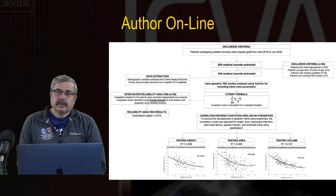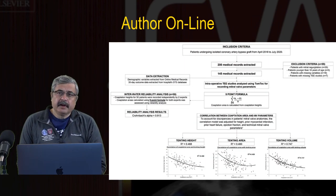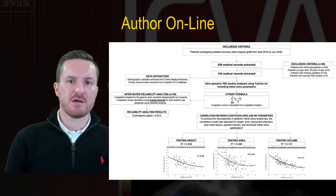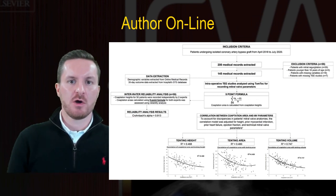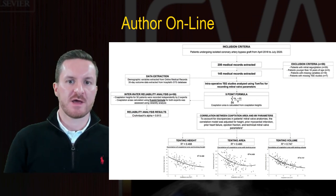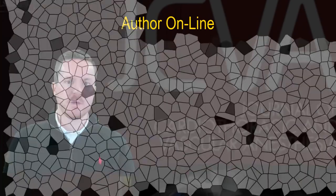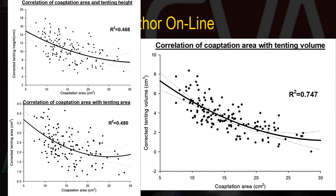My next question is: what are the major findings of this study? The major finding was that there was a negative correlation between all measured geometric indices of remodeling and coaptation area — the greater the degree of remodeling, the less the coaptation area.